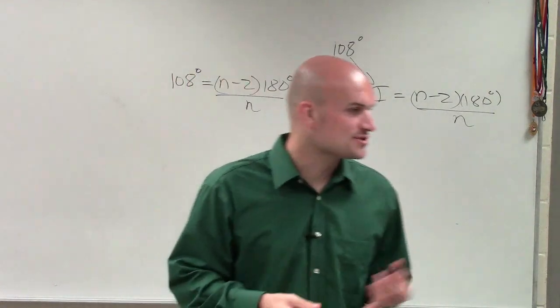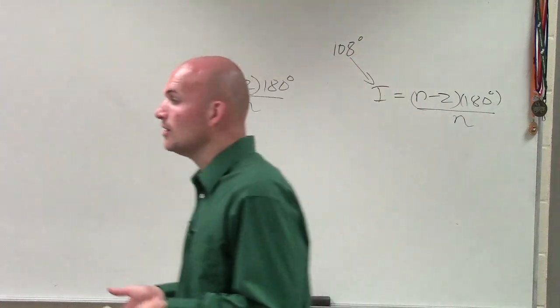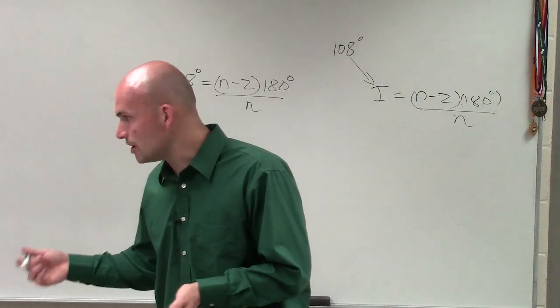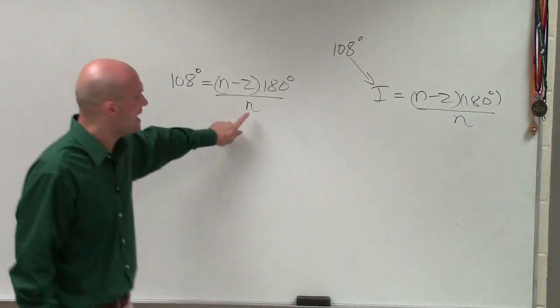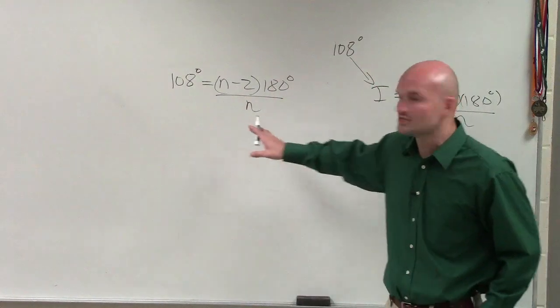Now, guys, going back to your Algebra 1 class, when we're solving for a variable, we have to get that variable isolated, right, by itself. Well, the first thing we need to do is we need to get it off the denominator. So how can I get it off of the denominator? What inverse operation can I use?